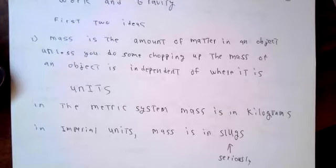In the metric system, mass is measured in kilograms, while in the traditional British Imperial unit, the mass is in slugs. We'll avoid the slugs as much as possible.